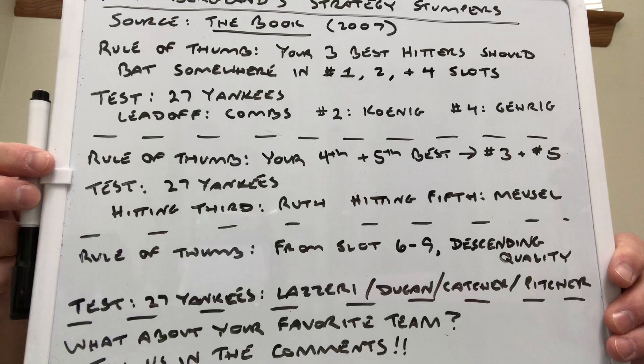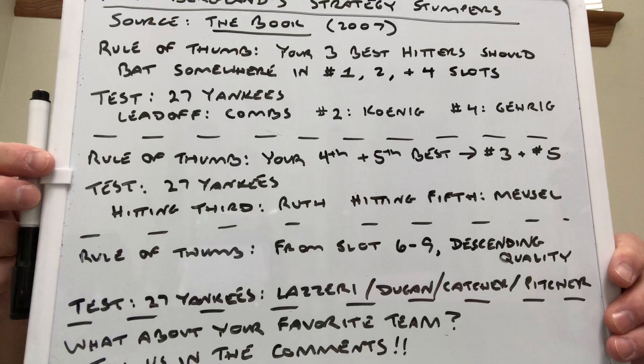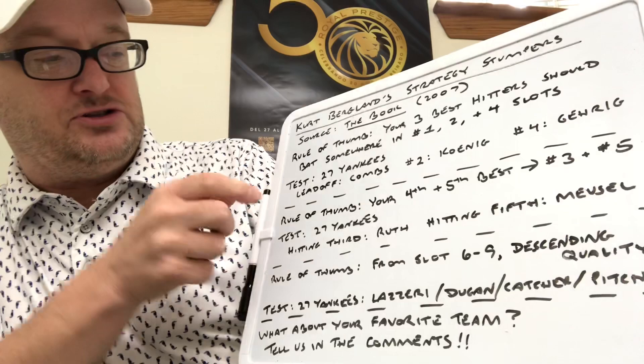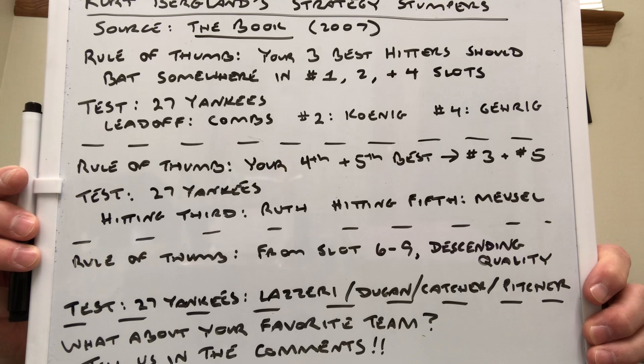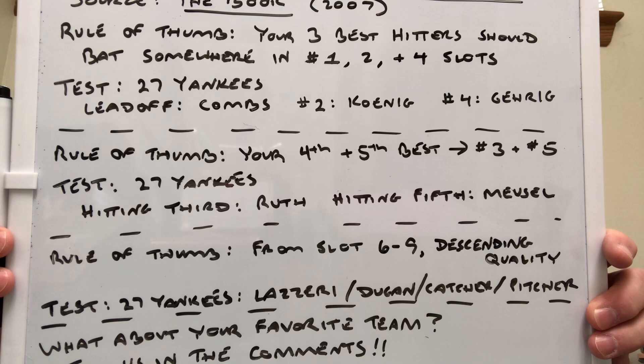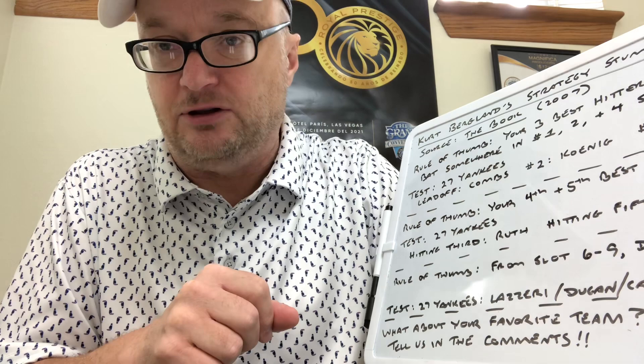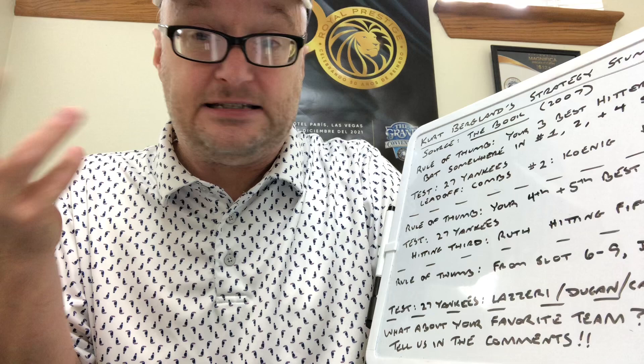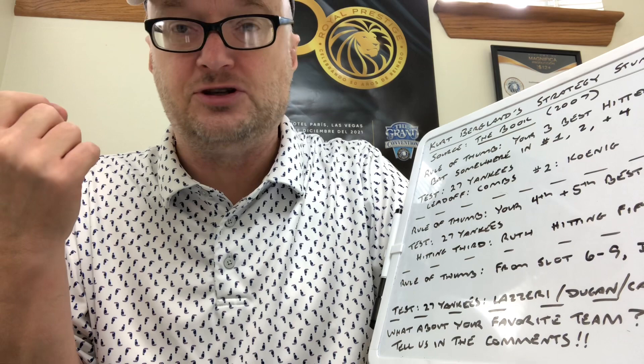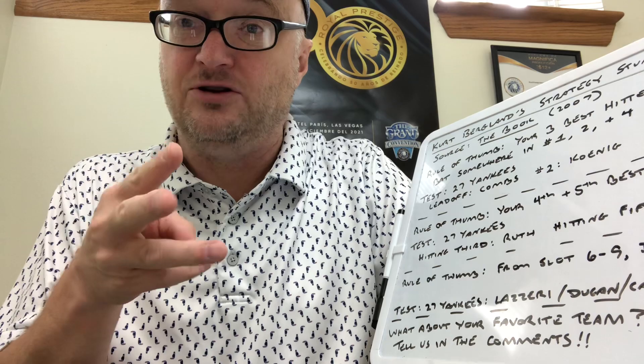Rule of thumb number two is that your fourth and fifth best hitters should go in slots three and five, respectively. For the 1927 Yankees, hitting third was Babe Ruth and hitting fifth was left fielder Bob Musil. You could make the case — and I think I would — that Musil was actually their third best offensive player, not Combs. That would mean Ruth, Gehrig, and Combs, the three, four, and five hitters in real life, weren't in their correct spots according to this theory.